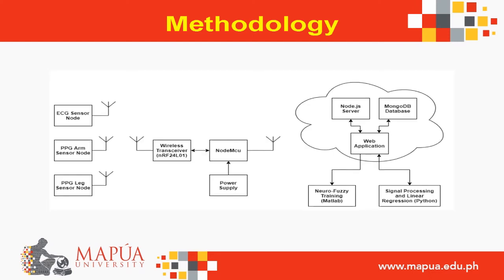For our block diagram, we have multiple sensor nodes: the ECG, PPG arm, and PPG leg sensor nodes, all of which incorporate a sensor that reads its corresponding signals. Each also has a wireless transceiver that sends its data to a node MCU. The node MCU in turn sends the data to the server. We also have a web application wherein the signals can be viewed and all calculations can be seen. All data regarding the recordings are saved in a database. The neurofuzzy system was implemented in MATLAB, while the signal processing and linear regression was done in Python.